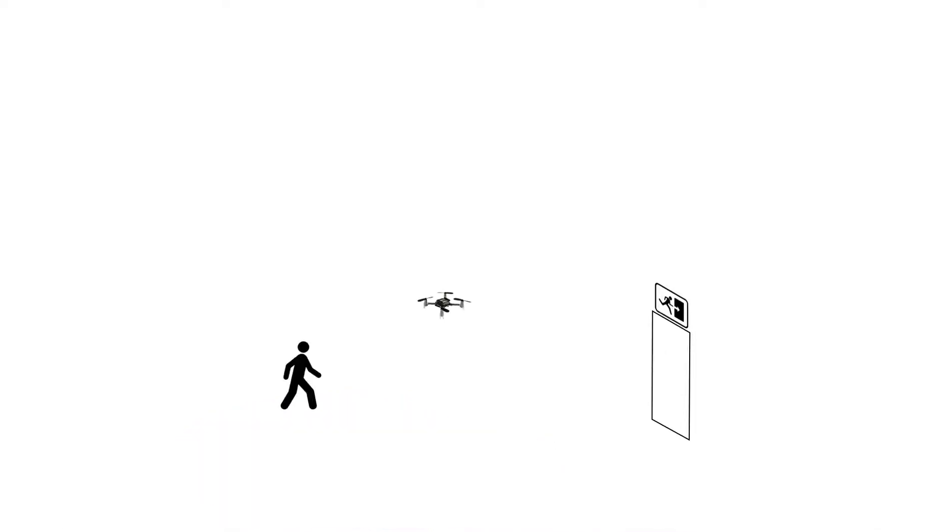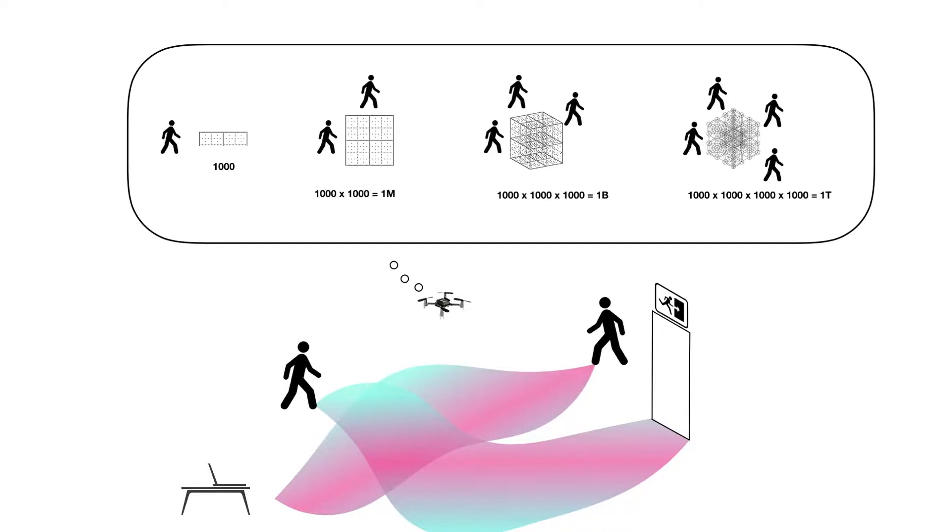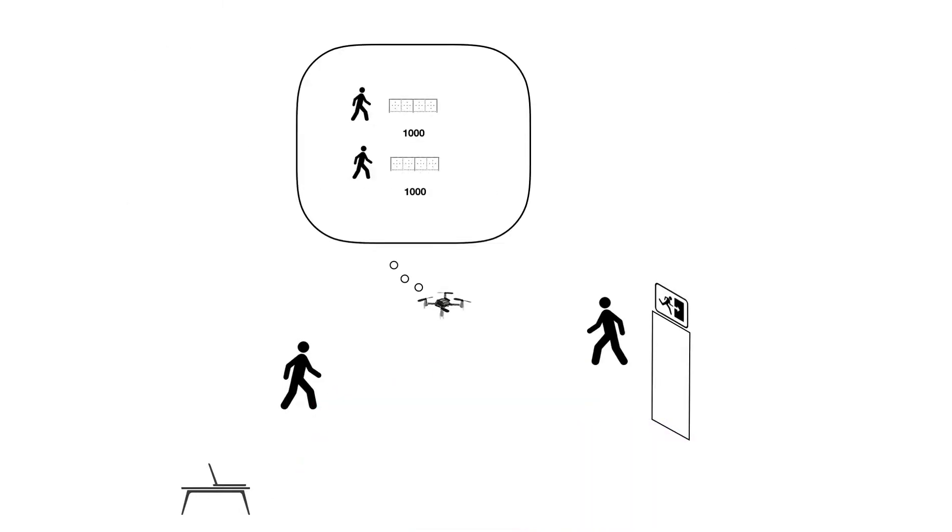Unfortunately, predicting the trajectories of multiple humans quickly becomes intractable and inevitably, any modeling assumptions we might introduce to alleviate this complexity will introduce systematic prediction errors.